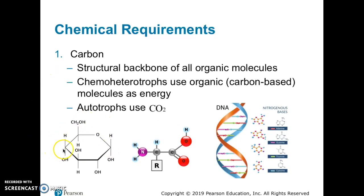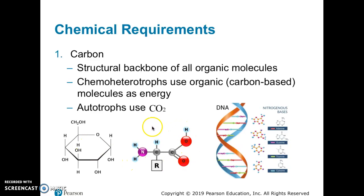Here are some examples. This is a sugar — every angle where there's not a letter showing an element, those are all carbons. There are also additional carbon molecules bonded off to the side of some of those. This is an example of an amino acid, part of a protein chain. You can see the backbone of every amino acid follows the same formula with these two carbon molecules in the middle.